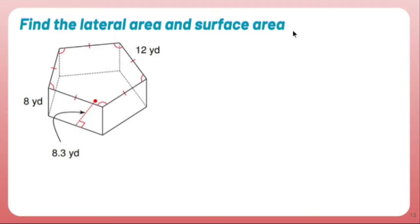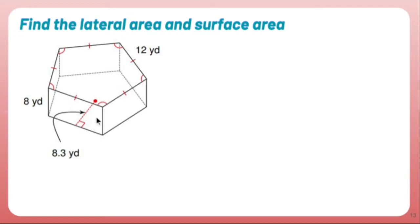Find the lateral area and surface area of this pentagonal prism. First things first, lateral area versus surface area. If I were to take this shape and sit it on its base — which it currently is — the lateral area is just the sides. These rectangles right here, and all the rectangles are the same. The surface area includes all five sides plus the top and the bottom. Let's find both of them.